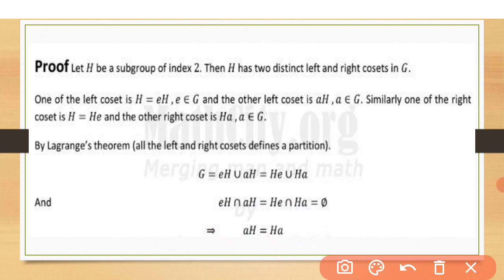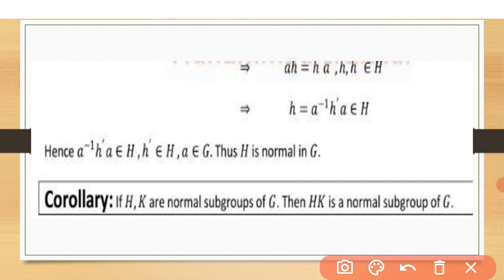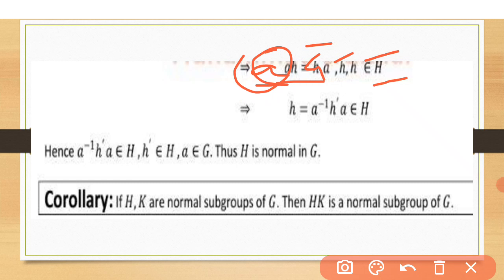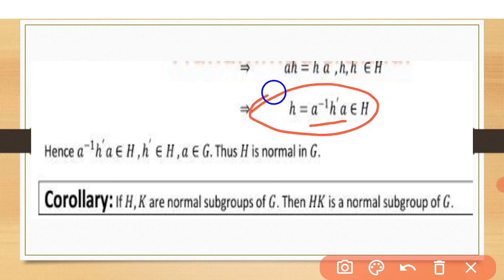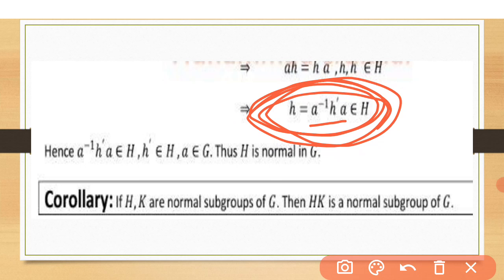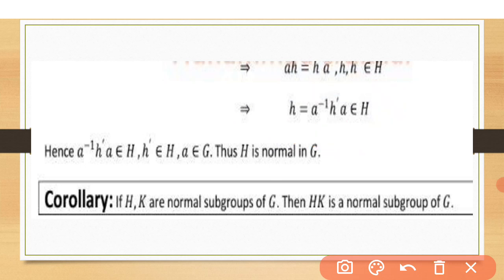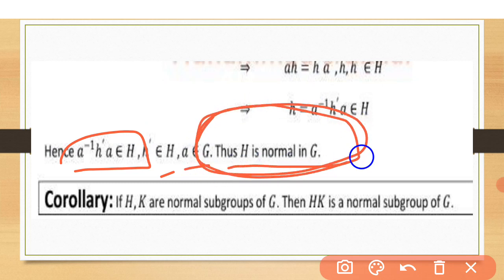Proceeding from AH = HA, we will prove that H is a normal subgroup. Here, for any h ∈ H and a ∈ G, if we multiply by a⁻¹ on both sides, we get a⁻¹ha ∈ H. This is precisely the condition for a normal subgroup. Hence a⁻¹Ha ⊆ H for all a ∈ G, and thus H is normal in G. Hence we have proved.